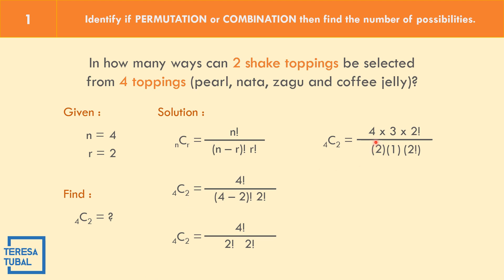We expand four factorial as four times three times two factorial. We cancel two factorial in numerator and denominator. Then four divided by two equals two, and two times three equals six divided by one. The answer is equal to six ways.